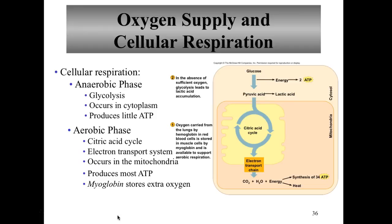The steps of anaerobic respiration are called glycolysis, and they occur in the cytoplasm of the cell, resulting in the production of pyruvic acid and two ATP. In the absence of oxygen, pyruvic acid gets converted to lactic acid, which will eventually lead to muscle fatigue — we'll talk about that a little later.